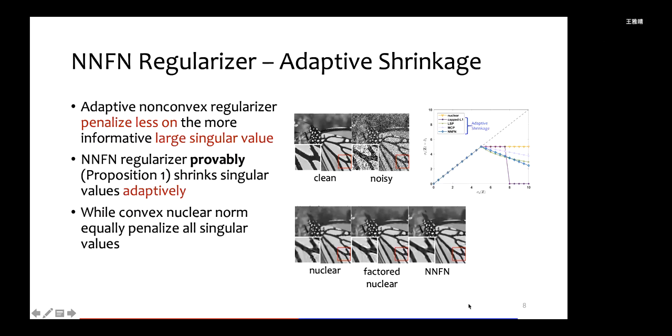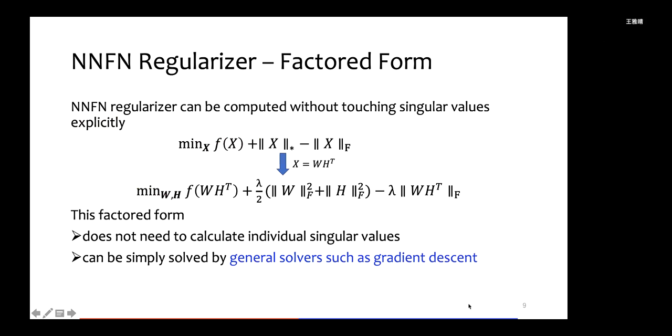However, in comparison to these existing non-convex regularizers, our proposed NNFN regularizer can be written in a factored form that avoids computing singular values or eliminates the use of costly SVD operations. This factored form allows faster optimization by using general solvers such as gradient descent.